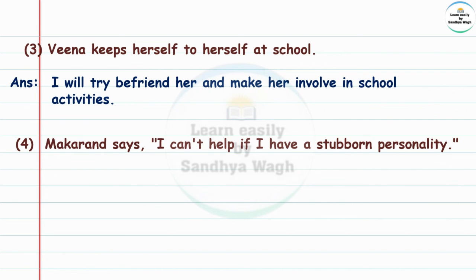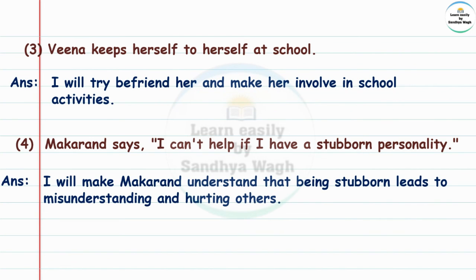Situation: Makarandh says, 'I can't help if I have a stubborn personality — mi kai karu maazha svobhawaj hatti aahe.' Answer: I will make Makarandh understand that being stubborn leads to misunderstanding and hurting others.